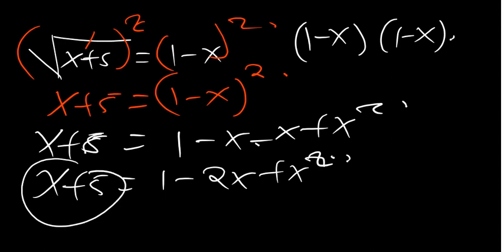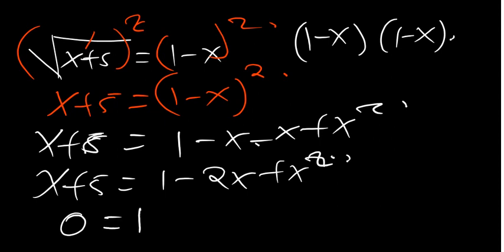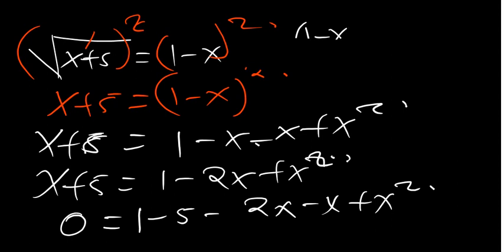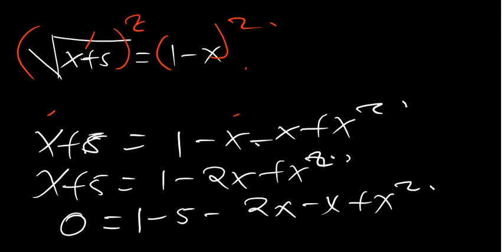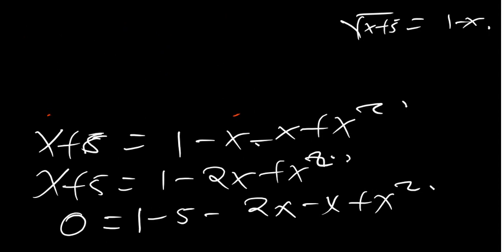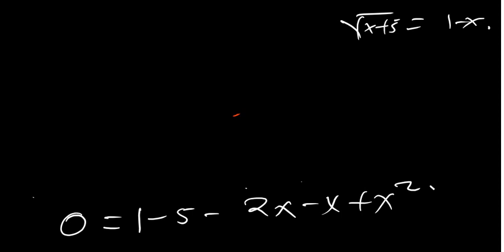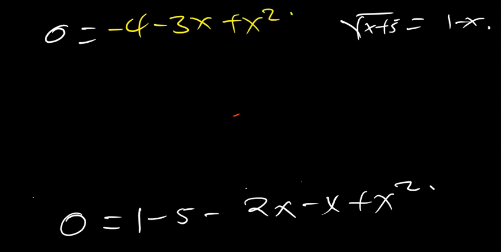Now I have to shift everything to the right-hand side so I'm left with 0 on the left. So 0 equals 1 minus 5, which gives negative 4, then negative 2x minus x gives negative 3x, plus x squared. Rearranging, we have x squared minus 3x minus 4 equals 0.